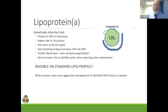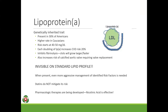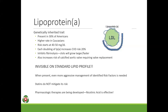Identifying folks with the Lp(a) genetic trait is critical, and because it's genetic, it helps you find cases within families. It is totally invisible on the standard lipid profile. Management means being more aggressive on all other discovered risks — blood pressure, blood sugar, smoking, lack of exercise, poor diet. Statin drugs do not mitigate the risk of this trait, which is one reason statins don't prevent all heart attacks. We know statins yield about a 30 percent reduction in heart attacks, meaning 70 percent of the time they don't fully work.